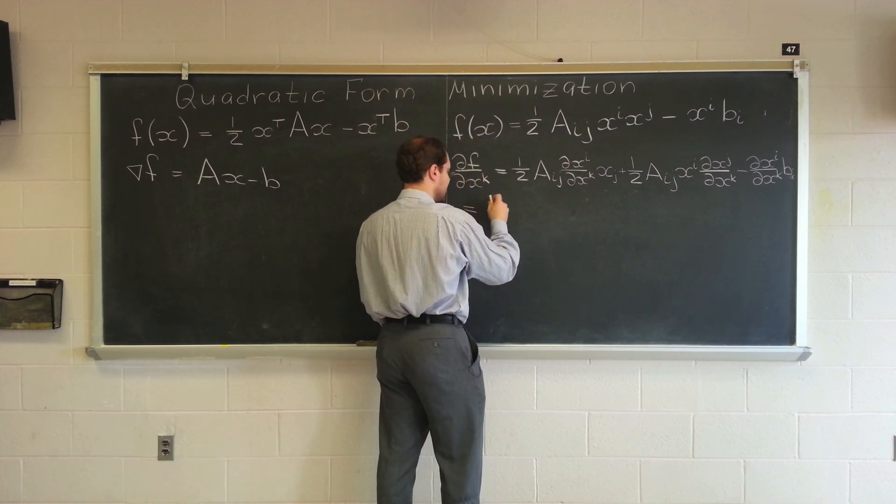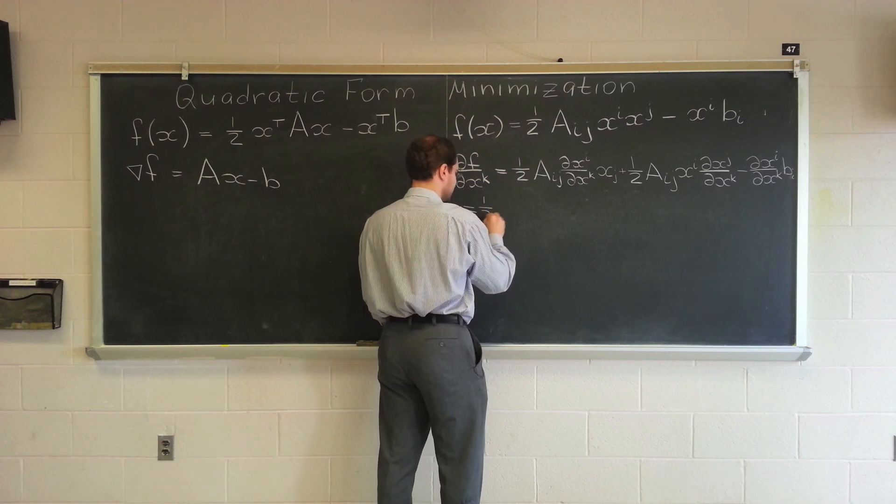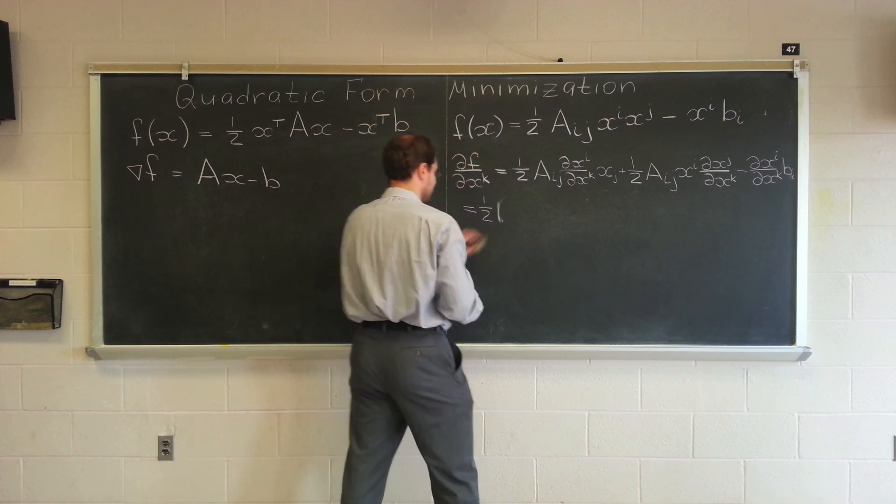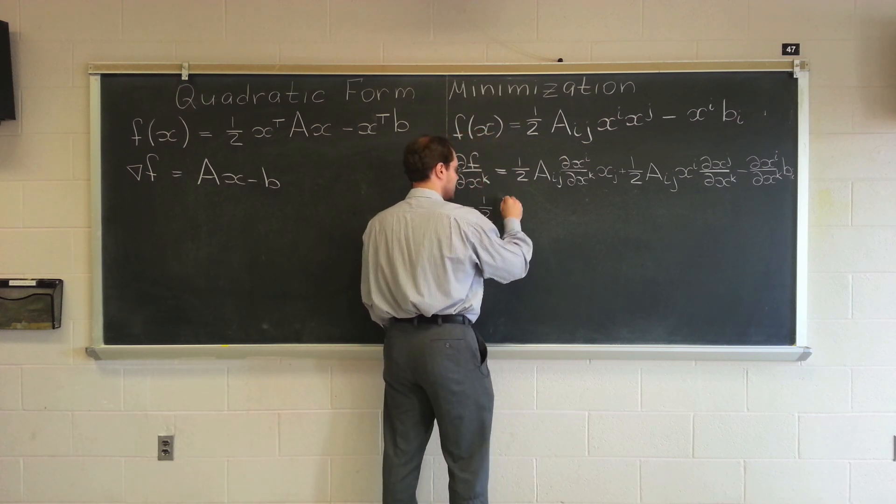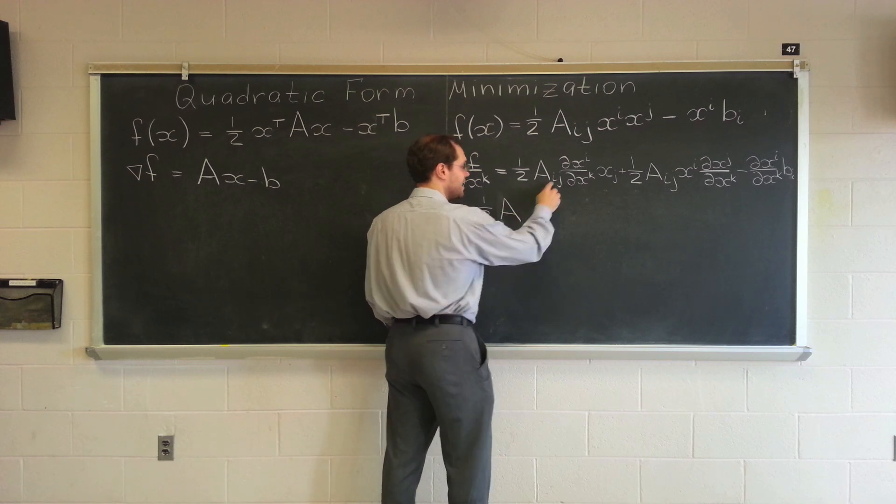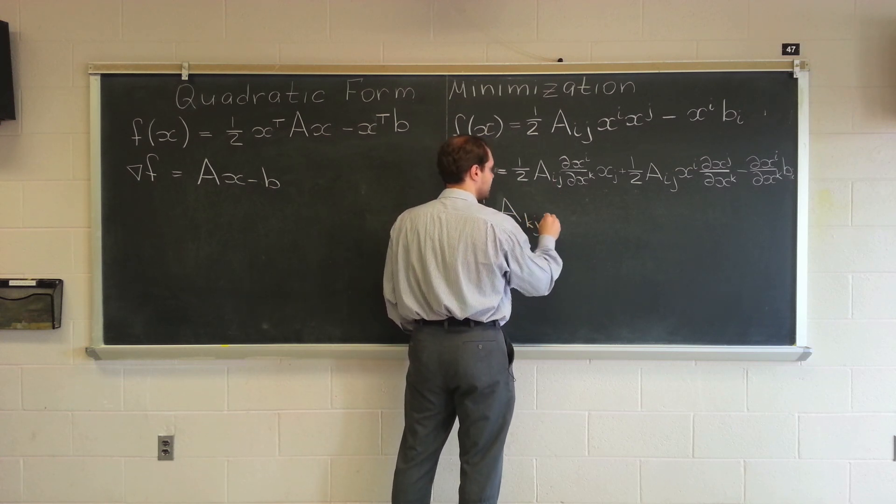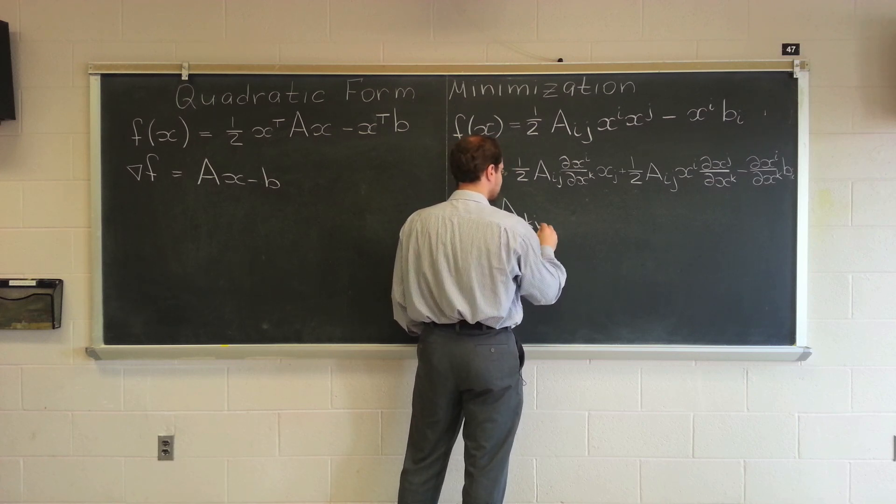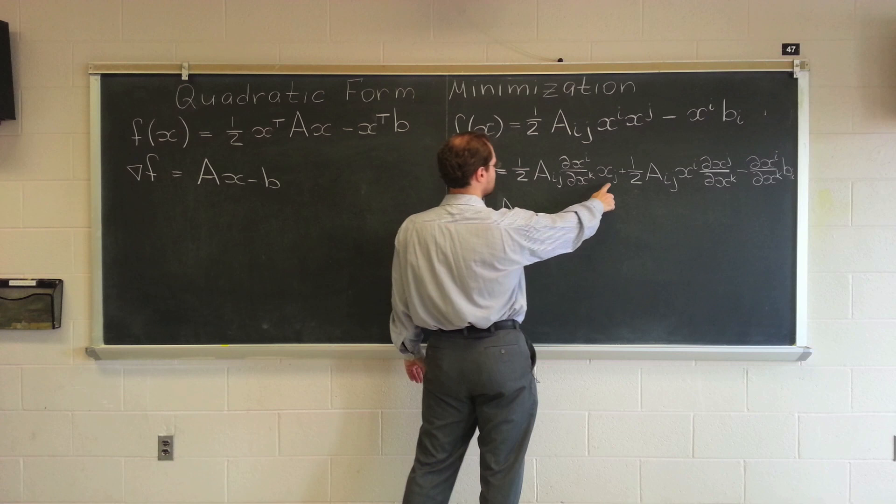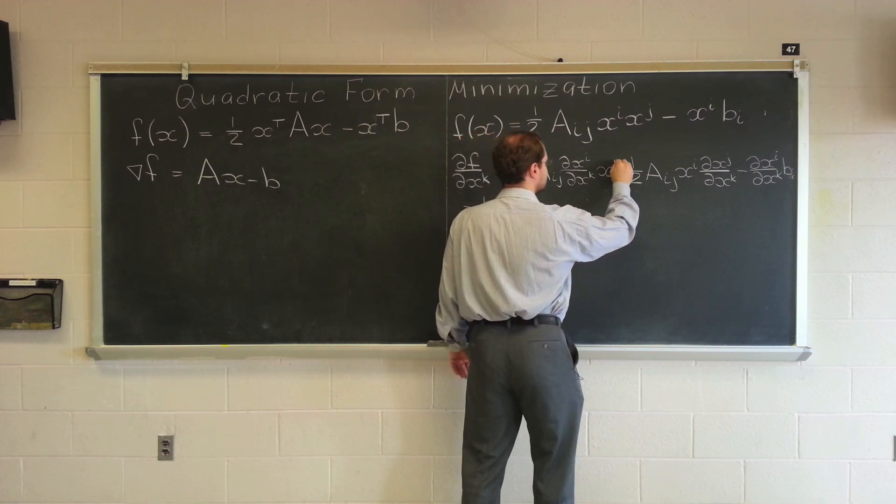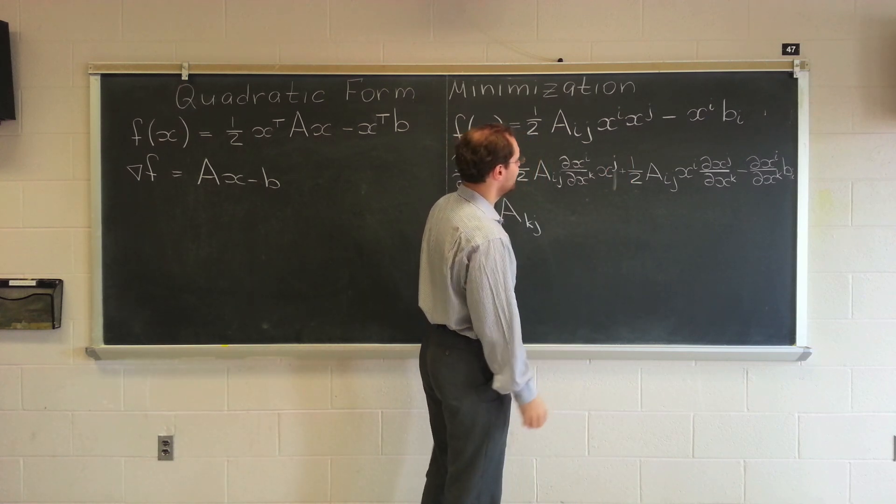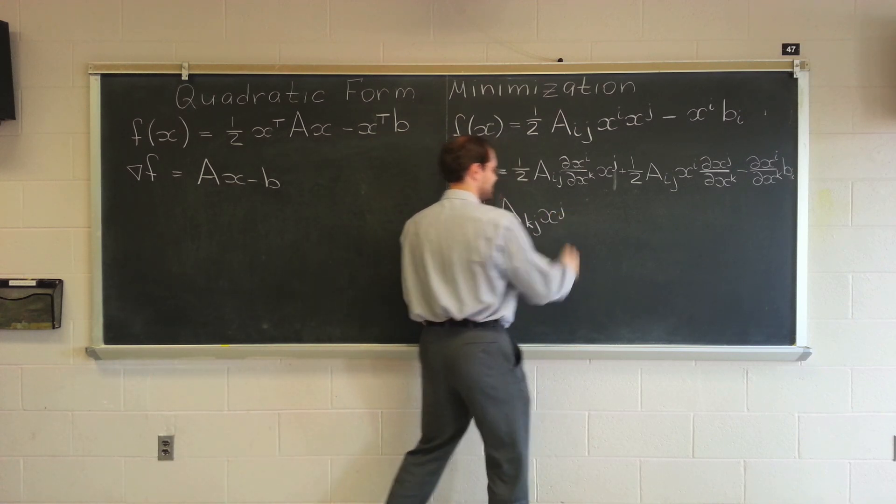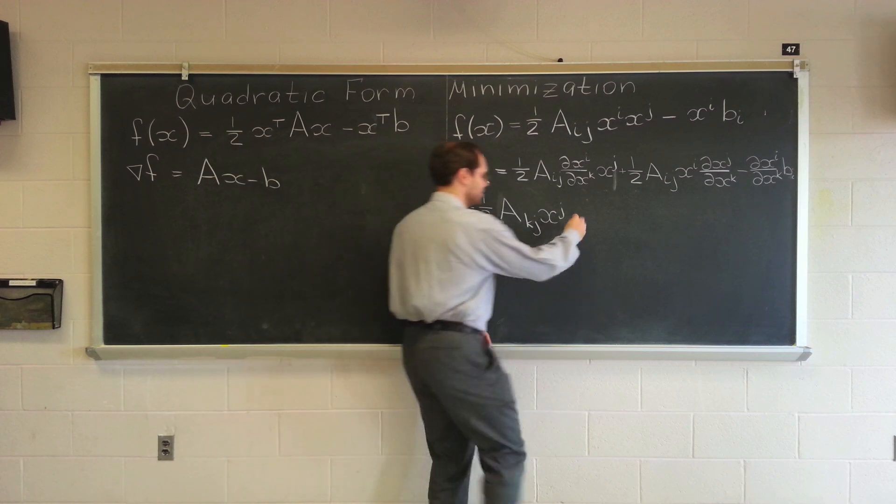So it becomes one half A_kj x_j. What did I say? Yeah. Oh, I have two lower j's. There you go. Sorry about that. Much better. x_j. And, tell me what the next term is.